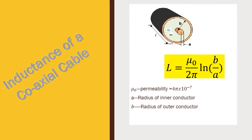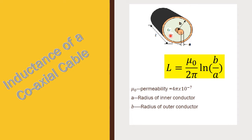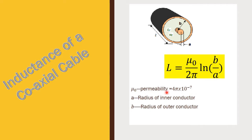Next, inductance of a coaxial cable. A coaxial cable has an inner conductor and an outer conductor. The inner conductor is of radius A and the outer conductor is of radius B. L is equal to mu_0 by 2 pi times ln(B/A). mu_0 value is 4 pi into 10 power minus 7. A is the radius of the inner conductor and B is the radius of the outer conductor.